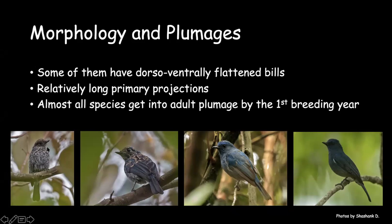In flycatchers like the niltava, when a chick fledges you can see the mantle, head, and breast are all mottled. By the end of the year, the male has already attained its plumage, though you can still see a slight amount of brown on the wings or parts of the head. This is when the bird is in adult breeding plumage where it completely changes. Thankfully, since these changes last only a year, it is much easier to identify flycatchers — we don't really have to figure out the molt in most cases.